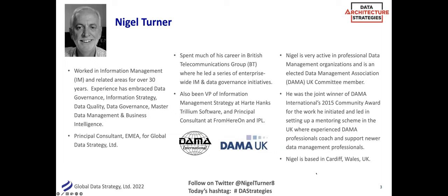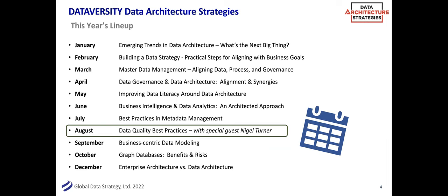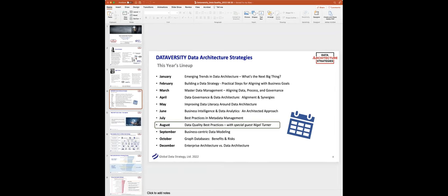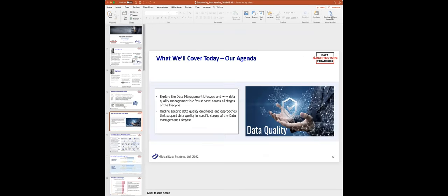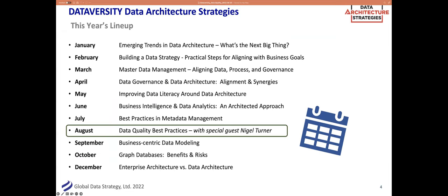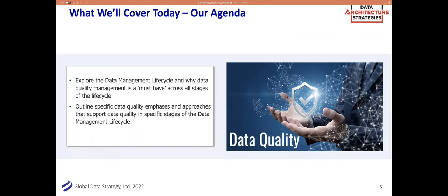Hello and welcome — thank you so much, Shannon. For those of you who are new to this series, this is a monthly series. Dataversity is great about keeping all of the previous sessions on demand, so if you missed any of the earlier sessions this year, you can go back to both the Dataversity website as well as our Global Data Strategy site. This month we're doing something a little different — we've invited Nigel Turner, an expert on data quality and our principal consultant for Global Data Strategy in the MEIA region. He's from Cardiff, Wales.